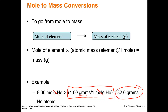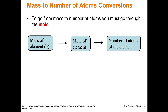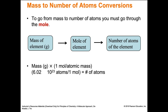We can string several calculations together. Going from mass to the number of atoms, we can go through the mole. Take the mass in grams times one mole over the atomic mass, then multiply by Avogadro's number — 6.02 × 10²³ atoms per mole. The grams cancel with grams, the moles cancel with moles, and we're left with just atoms. Remember, Avogadro's number can be of anything — atoms, pencils, anything.